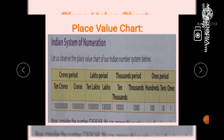One's period is divided into three blocks: ones, tens, and hundreds. Thousands period is divided into two blocks: thousands and ten thousands. Lakhs period is divided into lakhs and ten lakhs. Crore period is divided into crores and ten crores.